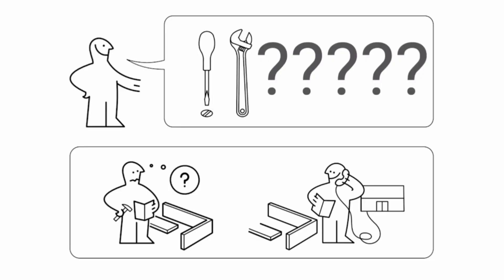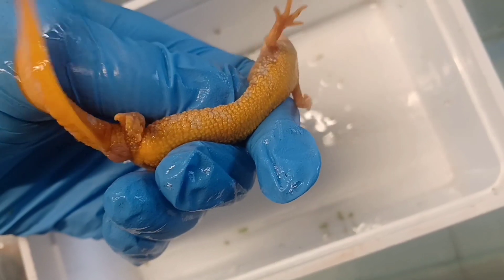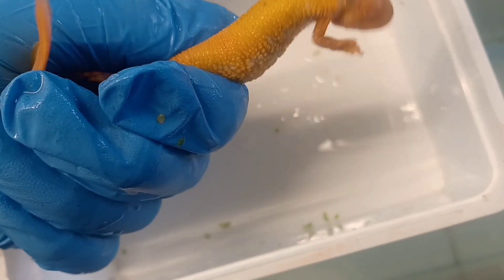Imagine you are building a flat pack table from your favourite Swedish furniture manufacturer and you are carefully following the instructions. If part of those instructions are missing, you won't know how to build that part of the table. Colour morphs occur when animals are missing part of their instructions, their genetic coding.